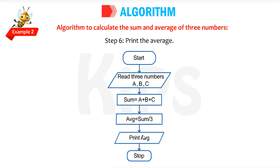After finding the average, you have to get the output. To get the output, you print the average. We already started, so there should be an end — start and stop. So these are the steps, or algorithm, to print the average.